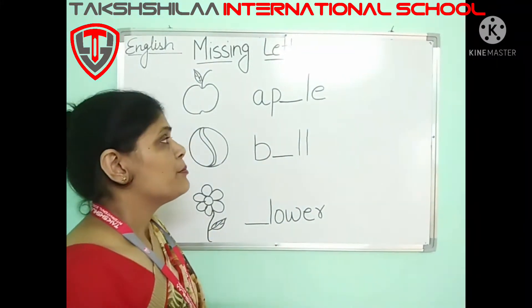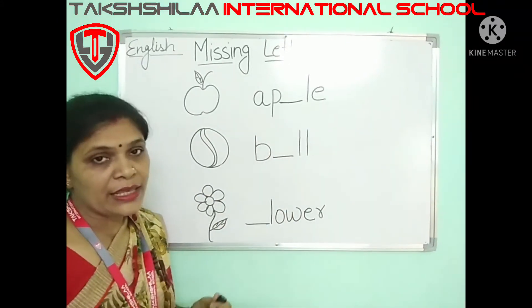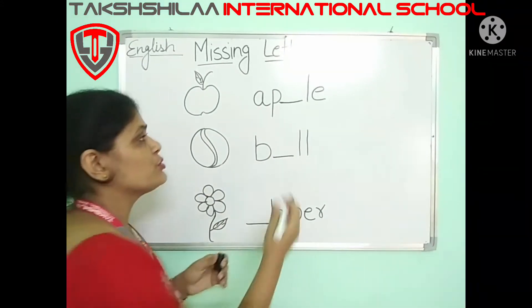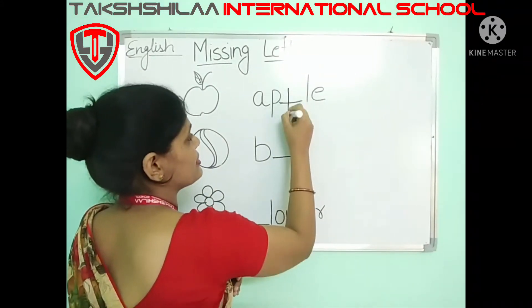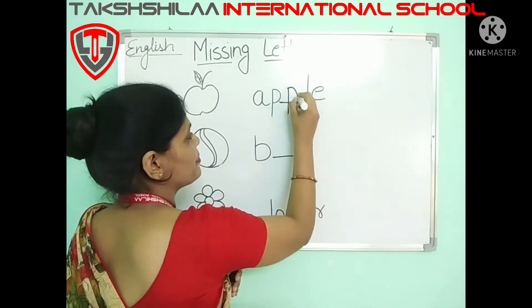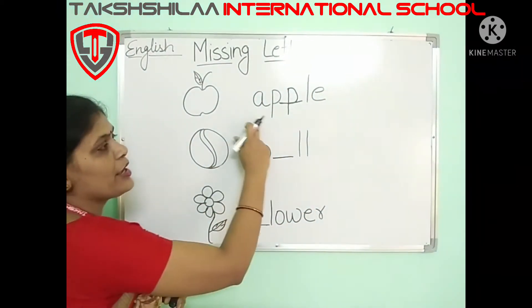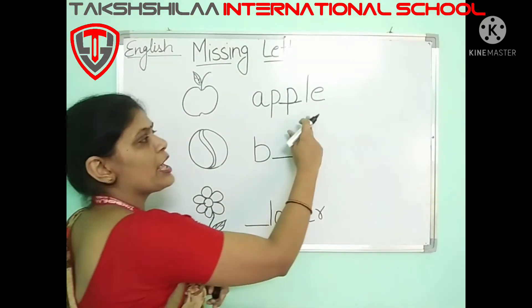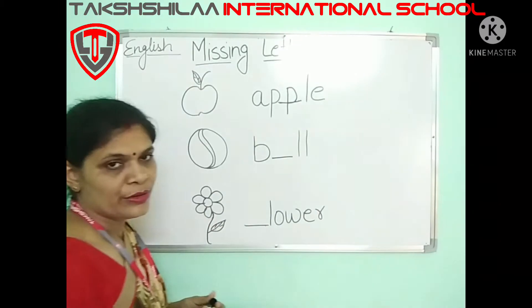But one P is missing here. So let's write here P. Now A, double P, L, E — apple. Okay?